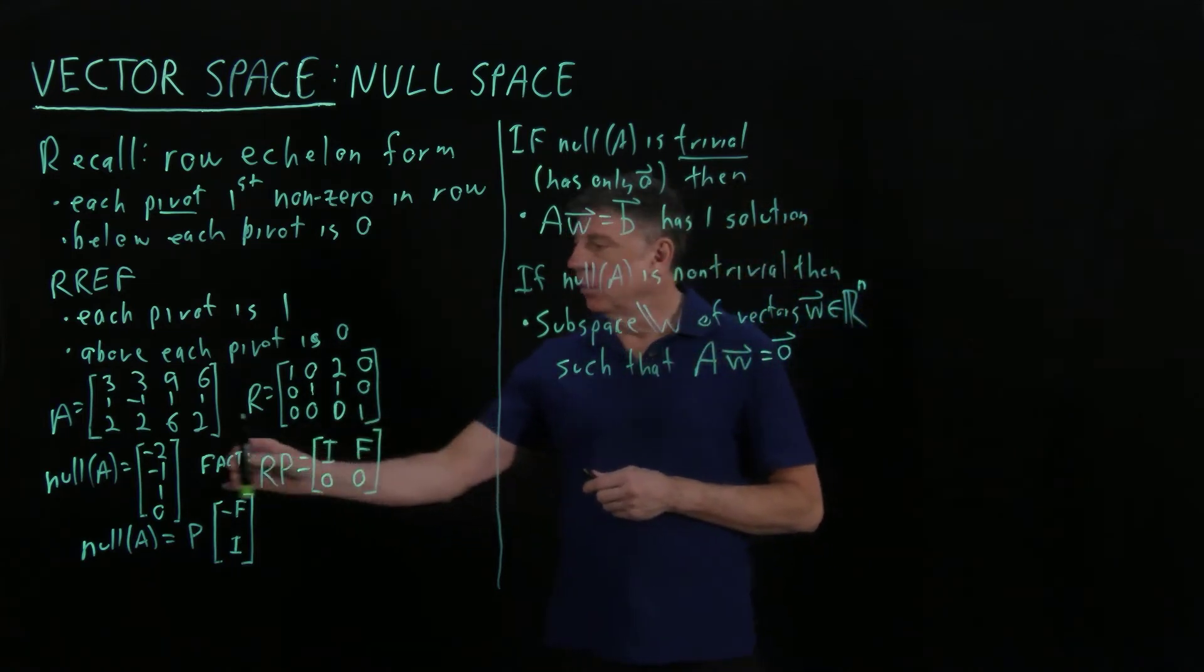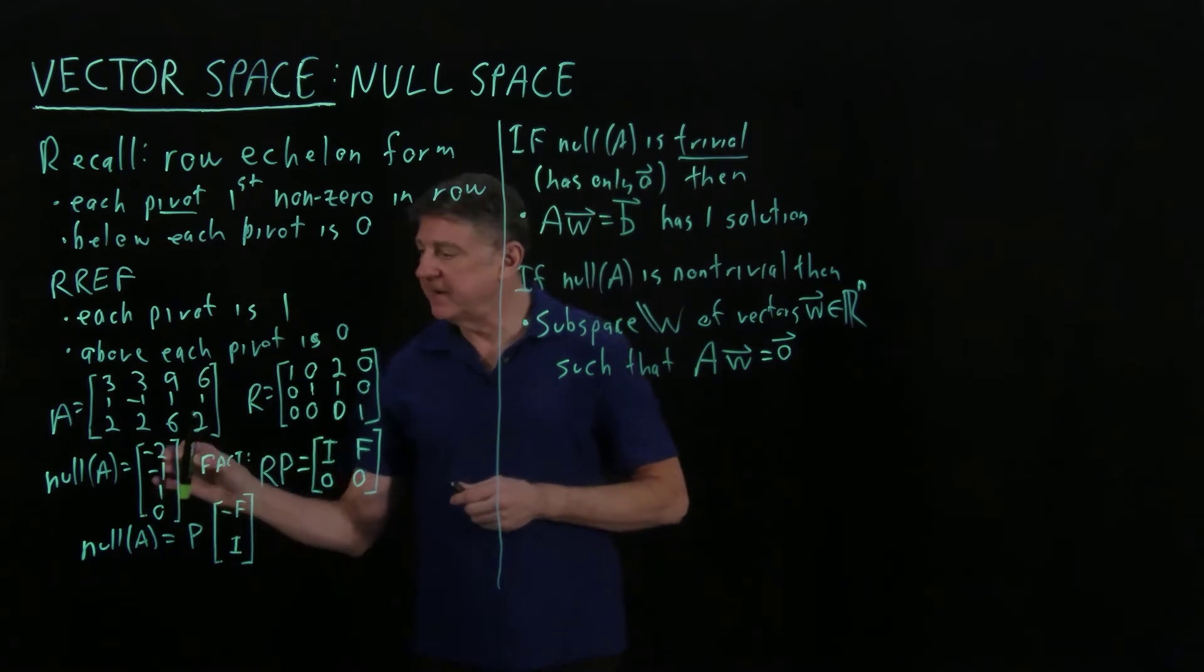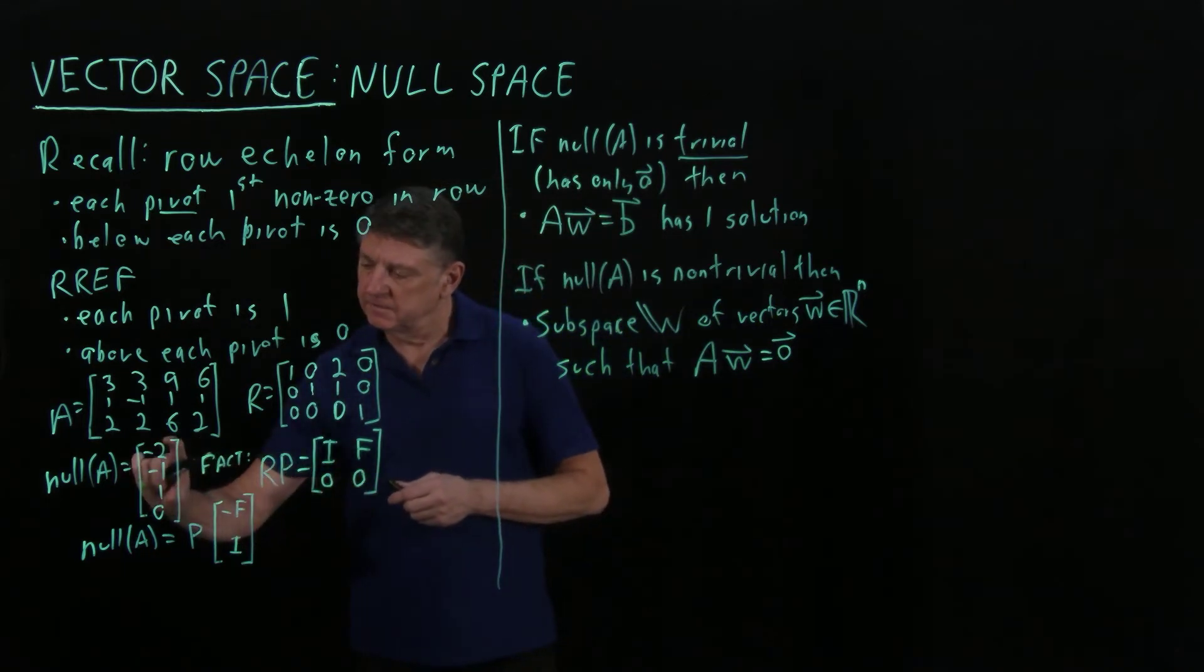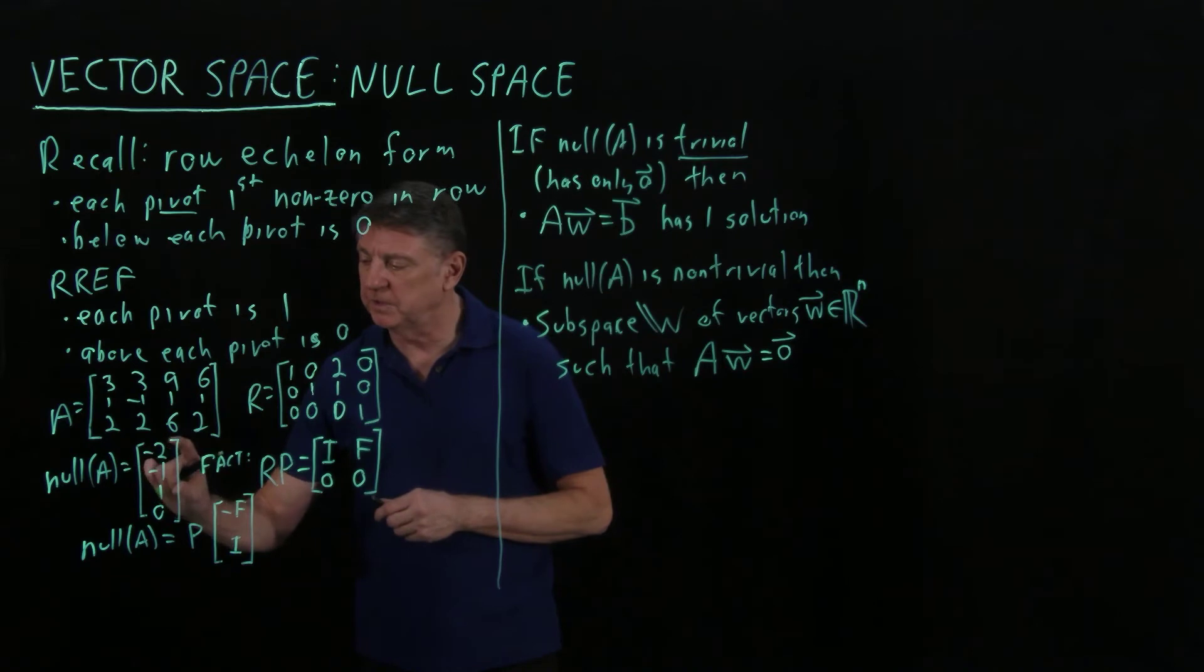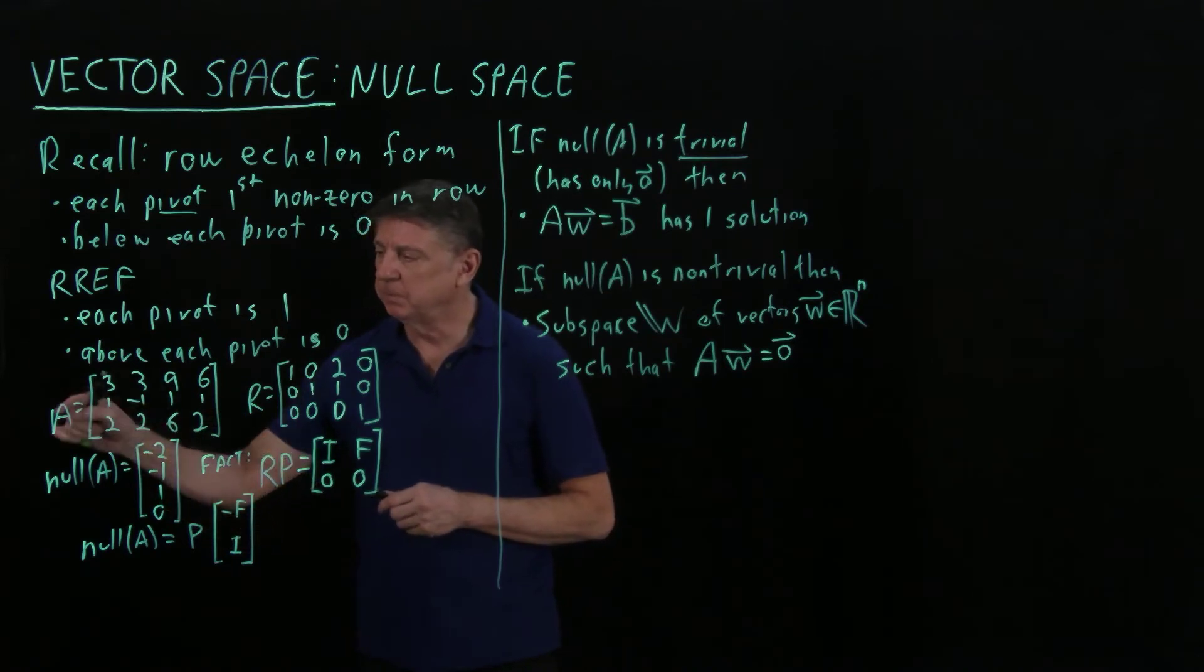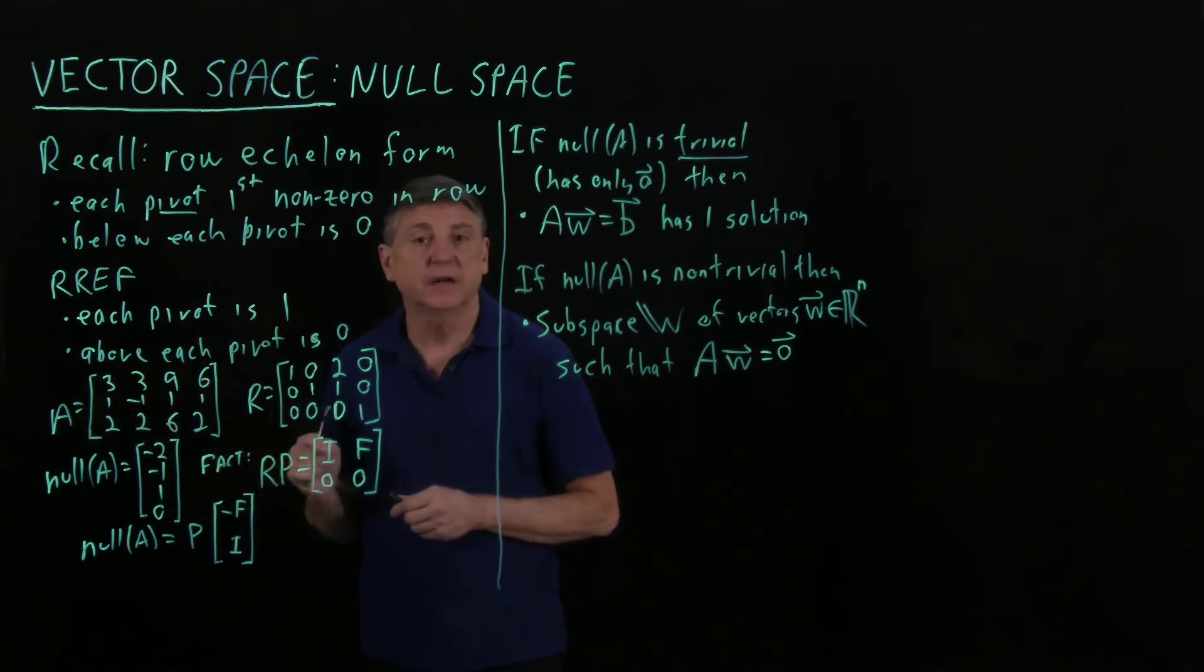In this case, what we're saying is that if I take this vector or any multiple of it—it could be 0, but any multiple of this vector—and I multiply it through A, I'll get the 0 vector.